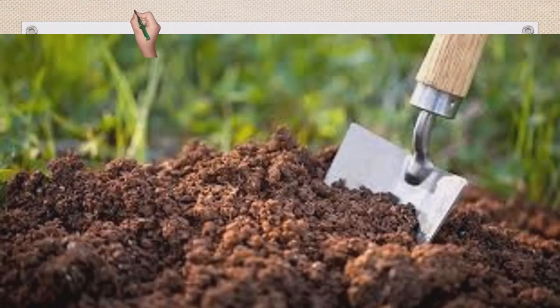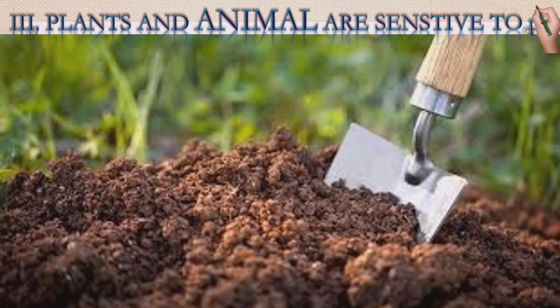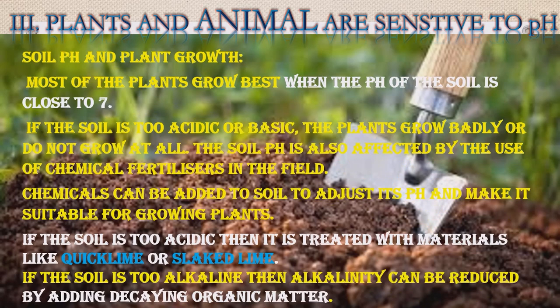Plants and animals are sensitive to pH. Most plants grow best when the pH of soil is close to 7. If the soil is too acidic or too basic, plants grow badly or do not grow at all. Soil pH is also affected by the use of chemical fertilizers. Chemicals can be added to soil to adjust its pH and make it suitable for growing plants. If the soil is too acidic, it is treated with quicklime or slaked lime. If the soil is too alkaline, alkalinity can be reduced by adding decaying organic matter.